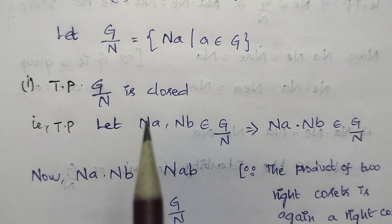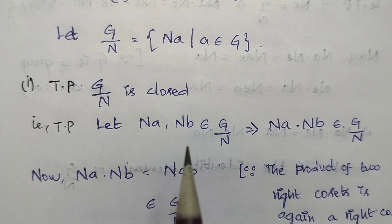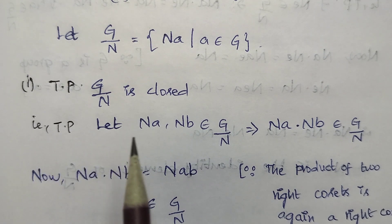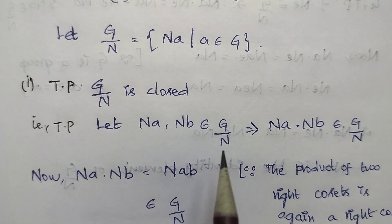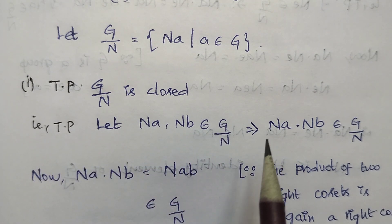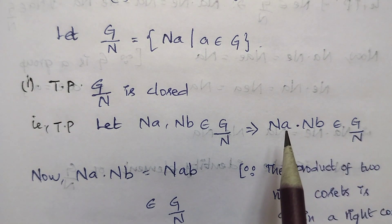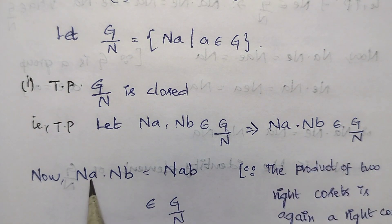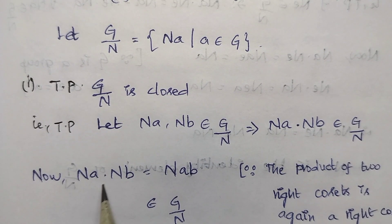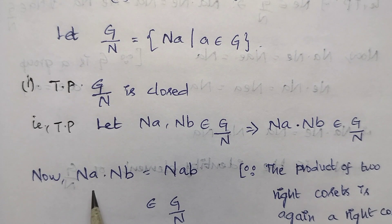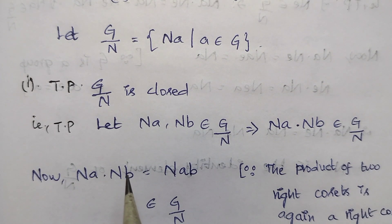That is, to prove: let Na and Nb belong to G/N, which implies Na·Nb belongs to G/N. We will check it out. Now, Na·Nb — in the last video we saw that if N is a normal subgroup of G, if and only if the product of two right cosets is again a right coset.